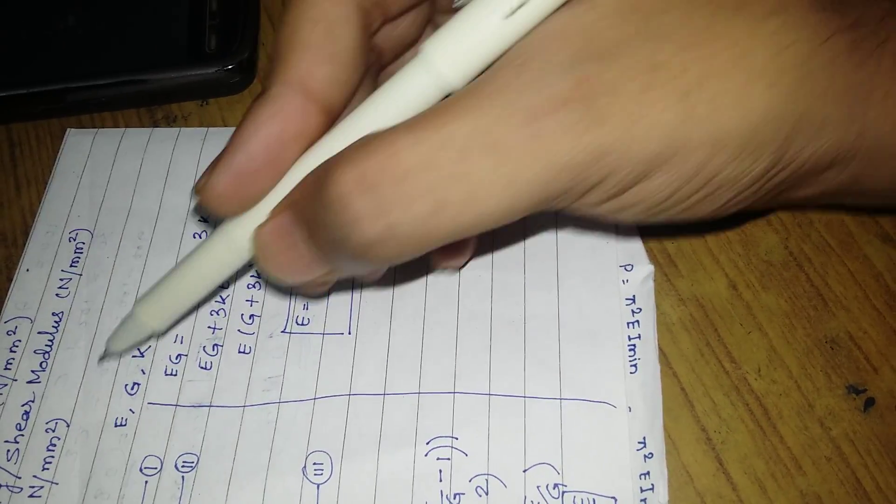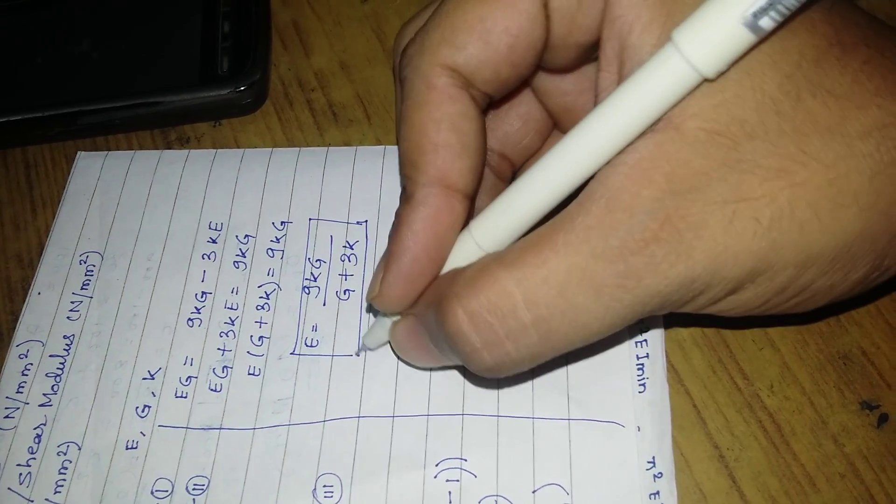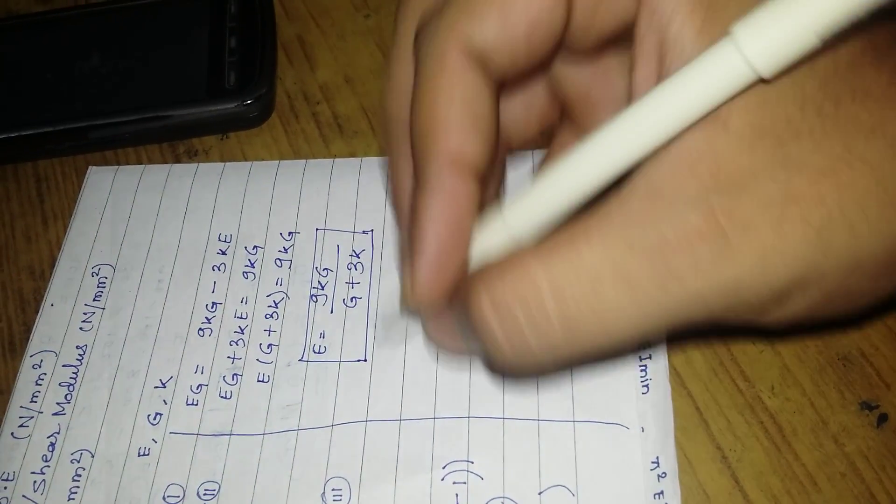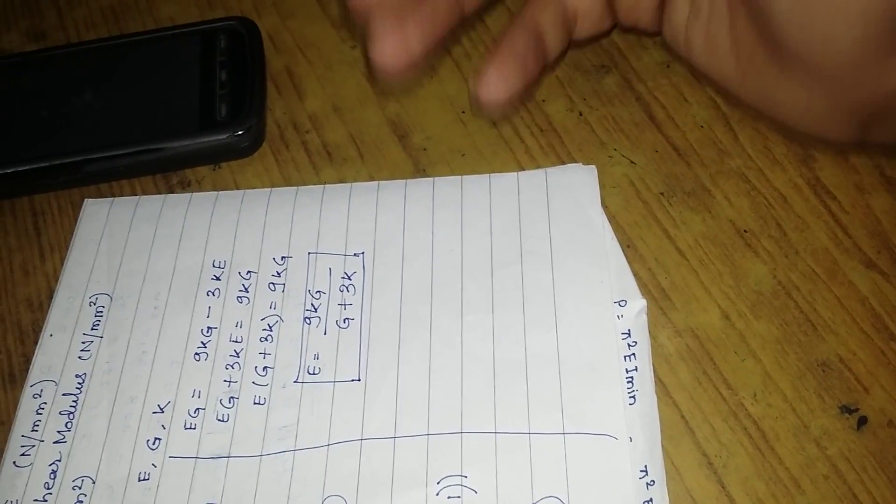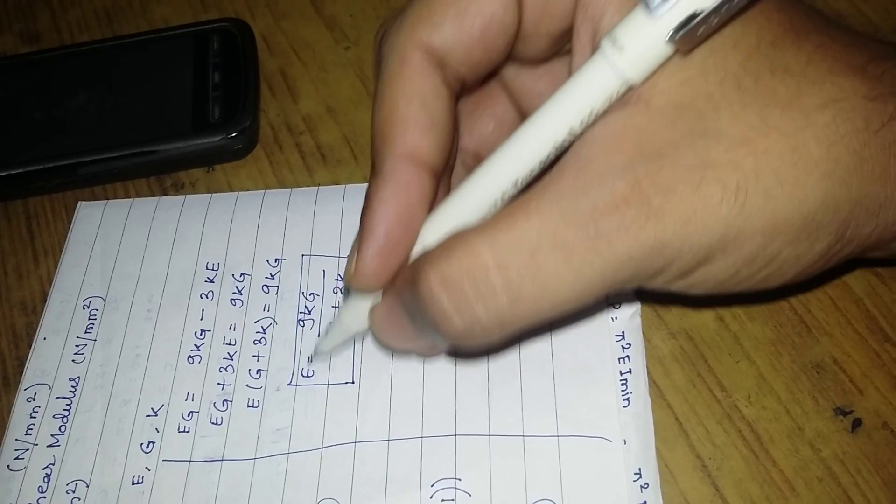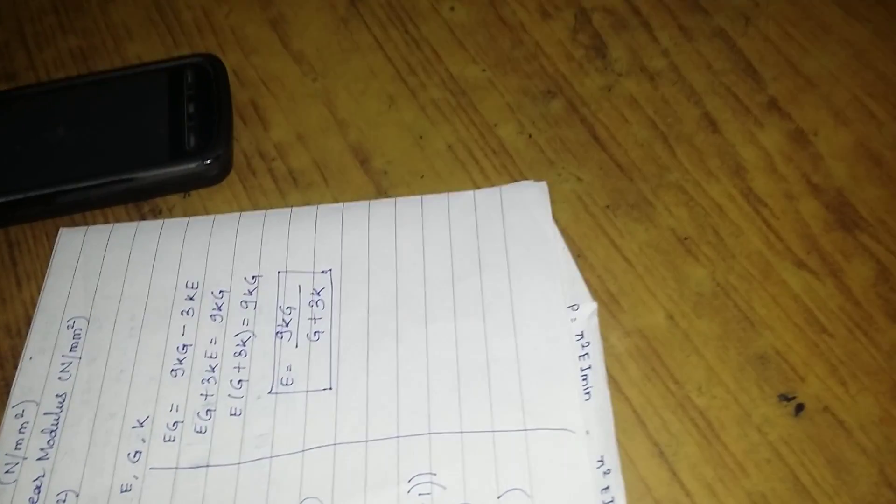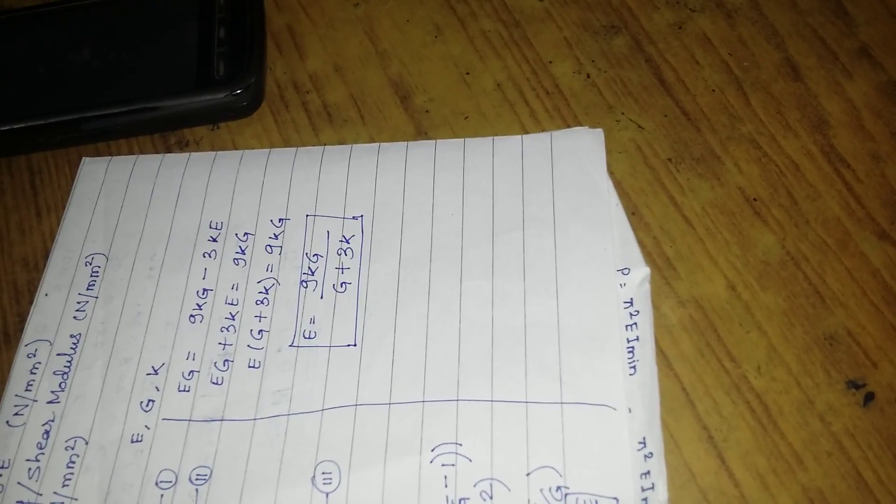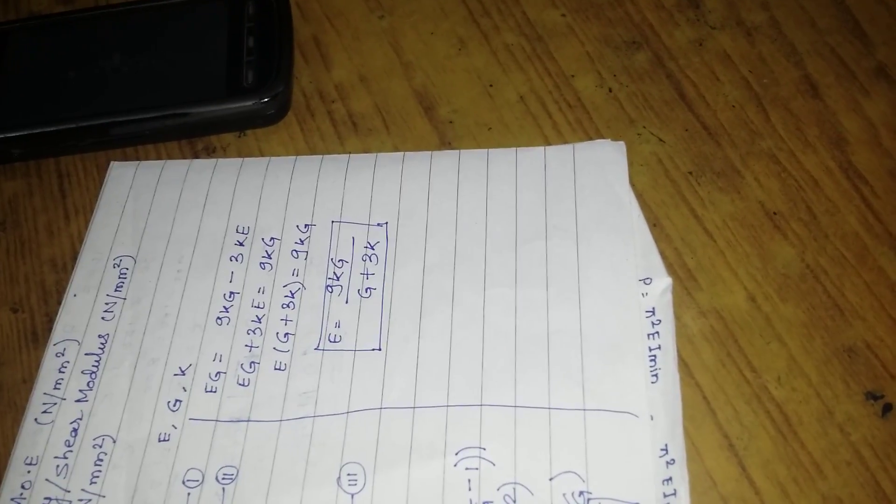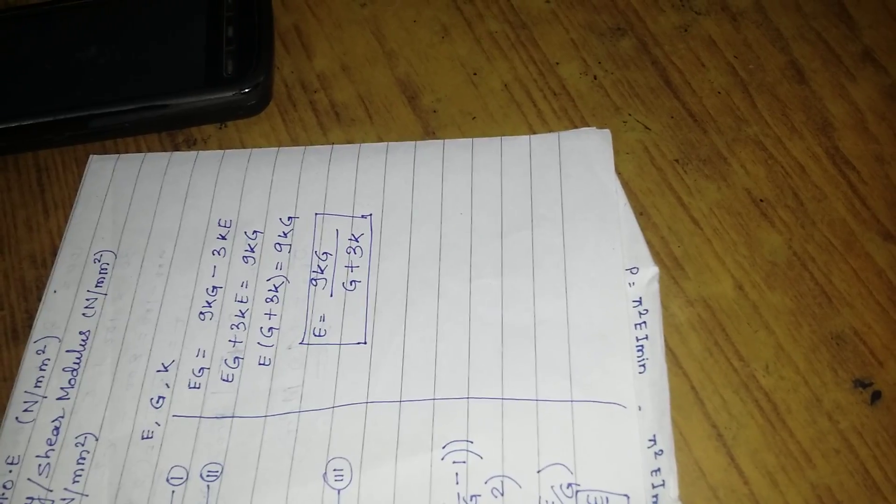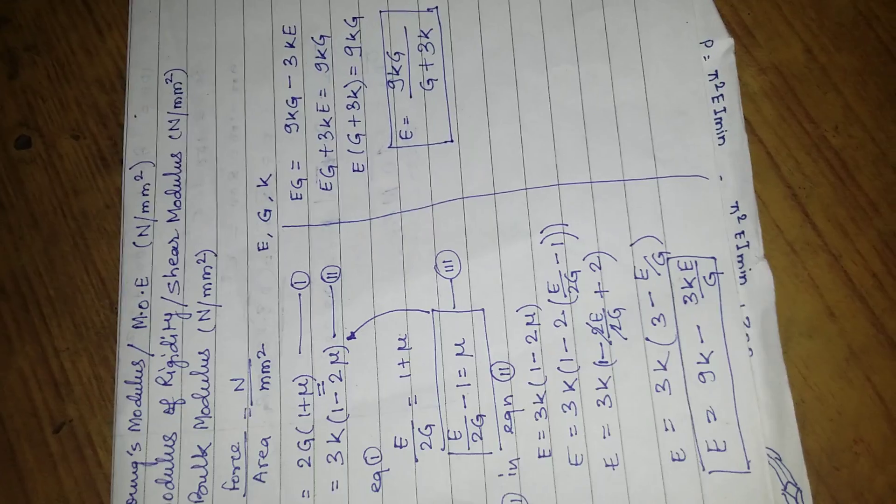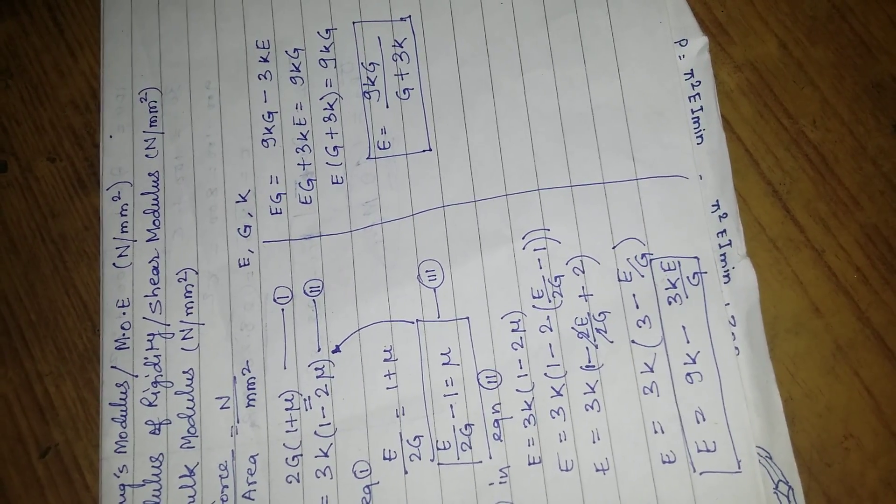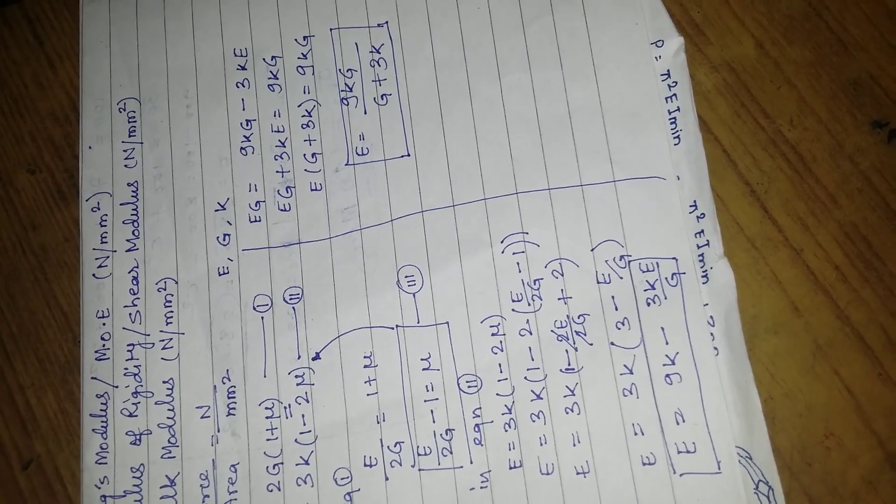So this equation is the relation between the three moduli E, G, and K. This is a very famous question asked in gate exams to establish the relation. Even for degree and diploma students, if the value of E and G is given, you can find the value of K. Out of the three moduli, value of two will be given and the remaining you have to find.